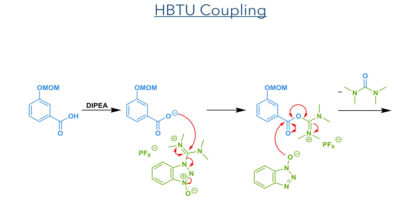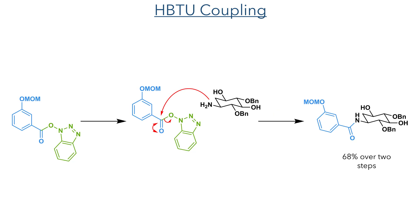This amine could then take part in an amide coupling reaction with a MOM-protected hydroxybenzoic acid. This is first deprotonated with diisopropylethylamine and the resulting carboxylate then attacks HBTU. This eliminates an oxybenzotriazole anion which then comes back as a nucleophile, eliminating a urea by-product and forming a more activated ester. This is then attacked by the amine, which forms the amide bond in a 68% yield over 2 steps.